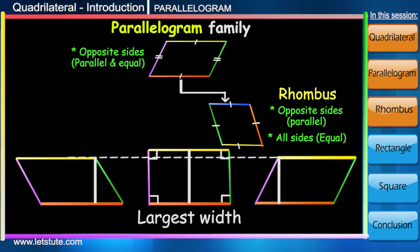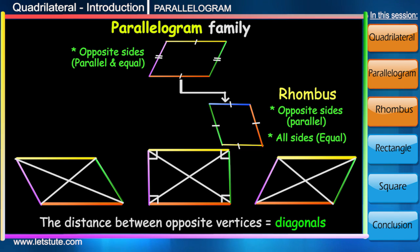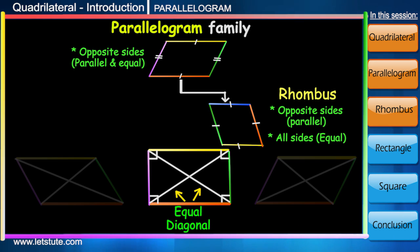And only in this position, the distance between opposite vertices, which is called diagonals, become equal, while in the rest of the shapes they are unequal.